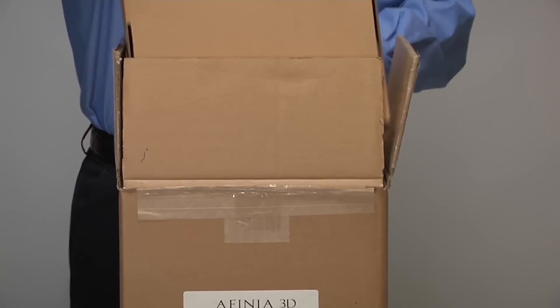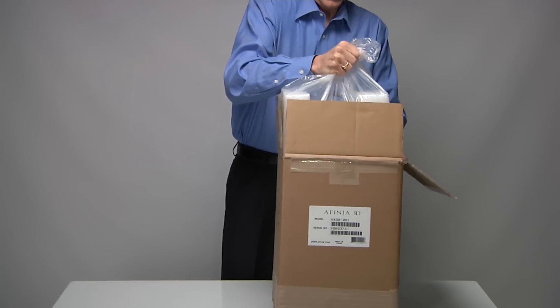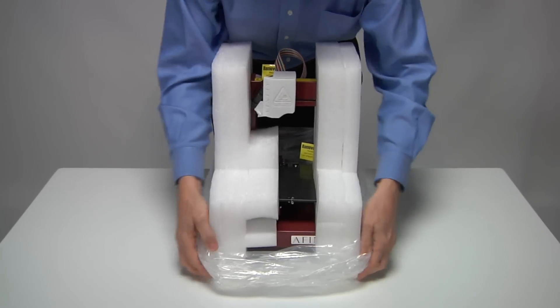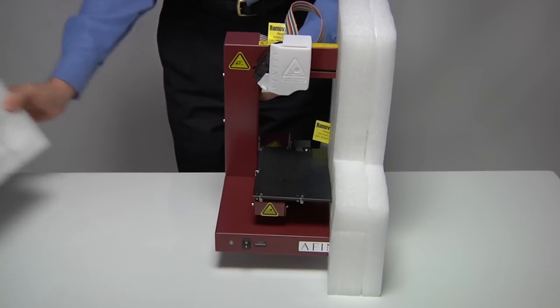Remove the accessory pack and set it aside. We'll use it later. Carefully lift the printer and foam from the box, remove the plastic bag from the printer, and remove the foam while supporting the printer.